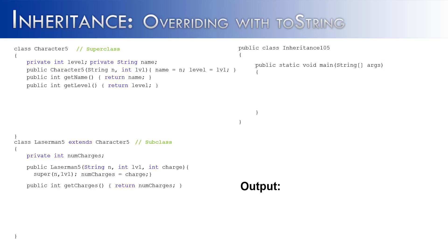Let's look at overriding with inheritance. In order to do that, we're going to look at three different classes: the Character5 class, which is going to be the super class; the LaserMan5 class, which is going to extend the Character5 class and be its subclass; and Inheritance105, which is our runner — it creates the objects and calls the methods. To show overriding, I'd like to first create a method called outputStuff inside the superclass, which outputs: 'This is from the super class.'